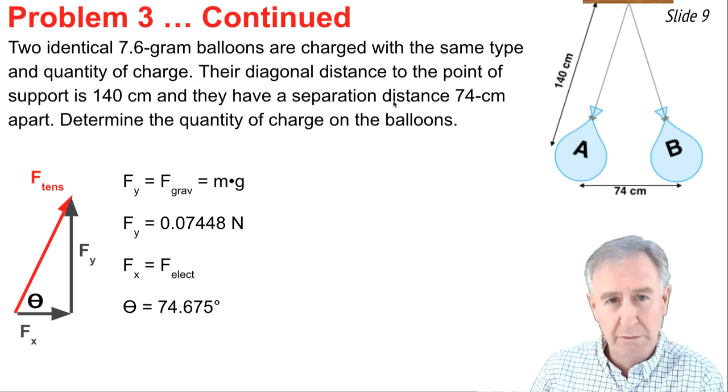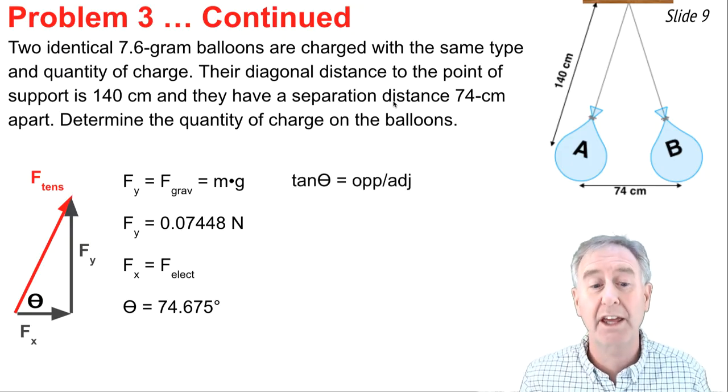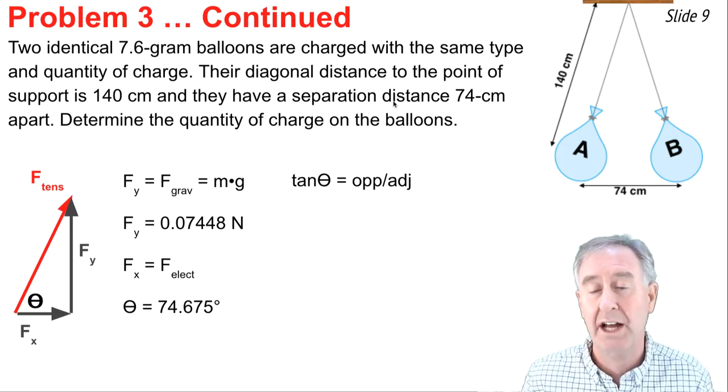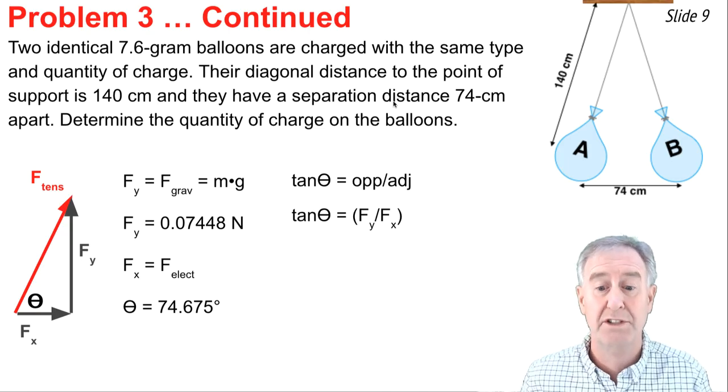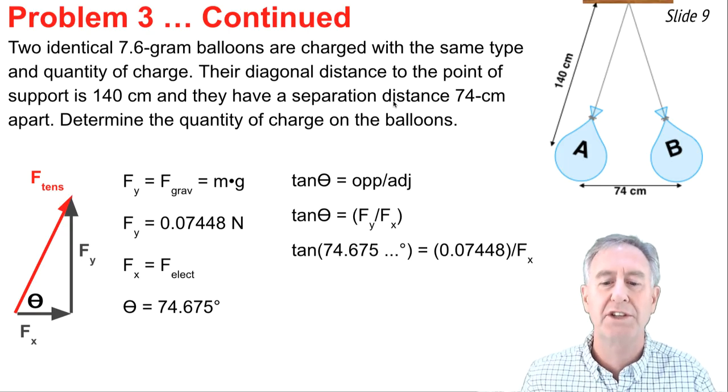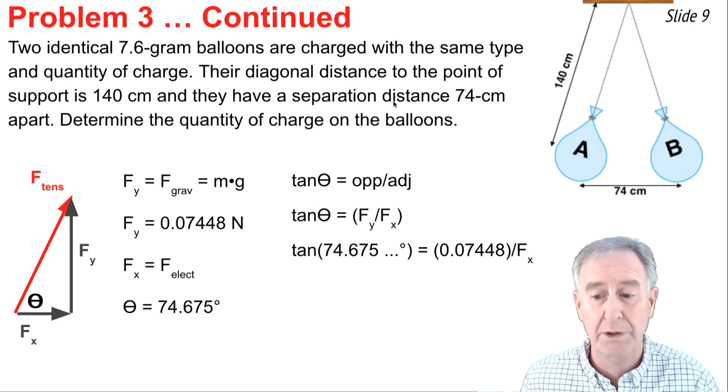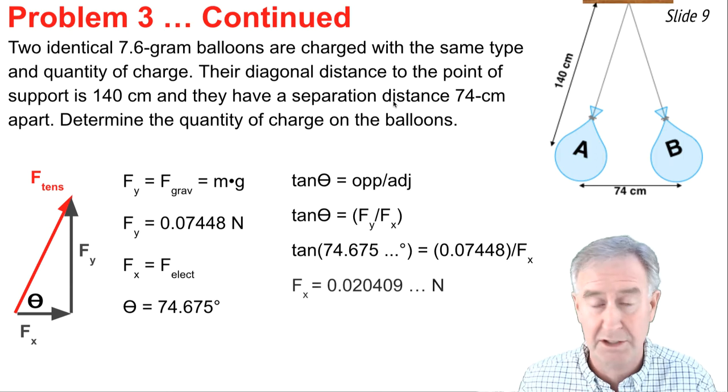So here's my original force triangle. And I now know the value of theta. And I can use that value of theta to calculate the Fx value. I say tangent of theta is the side opposite over the side adjacent. And the side opposite I've already calculated is the force of gravity. I can substitute that into this equation. So the tangent of 74.675 is equal to the force of gravity, or y component, divided by the Fx. Now a couple of steps of algebra will get me to the value of Fx.